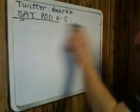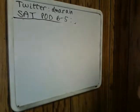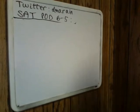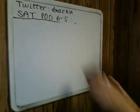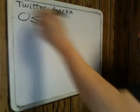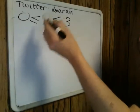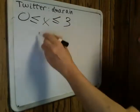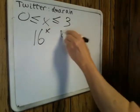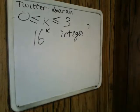Another problem that I tweeted the other day — and we have about three minutes to go here — was this: x is greater than or equal to 0 and less than or equal to 3. The question is, for how many values of x will 16 to the x be an integer?